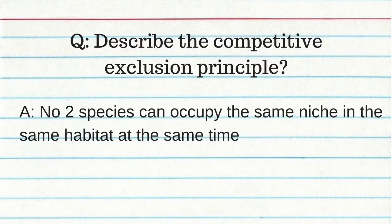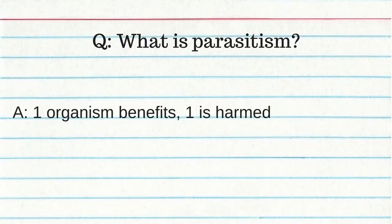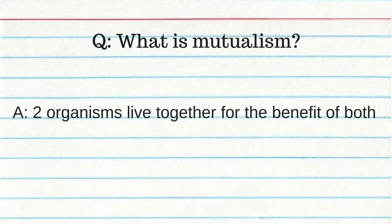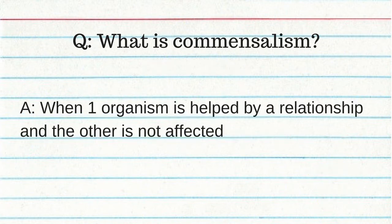Describe the competitive exclusion principle: no two species can occupy the same niche at the same habitat at the same time. What is symbiosis? A close long-term association between two or more species. Parasitism is when one organism benefits and the other is harmed. Mutualism is when two organisms live together for the benefit of both. An example of mutualism is lichen, which is algae plus fungus, and nitrogen-fixing bacteria plus the root of the plant. Commensalism is when one organism is helped by the relationship and the other is not affected.